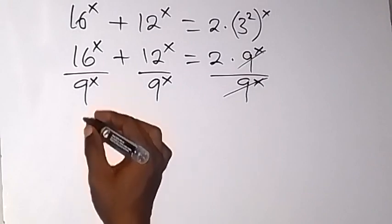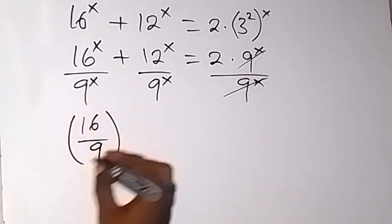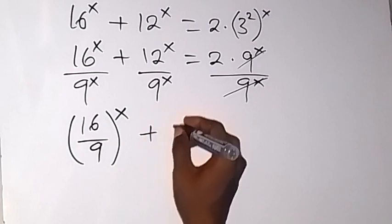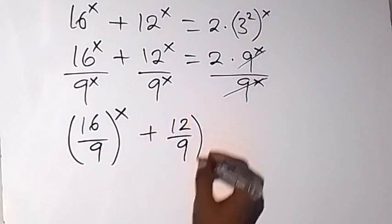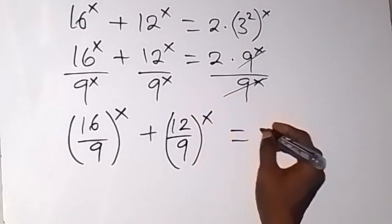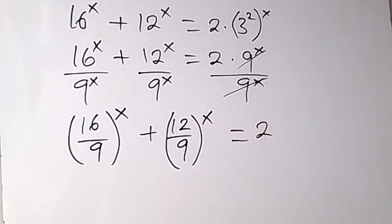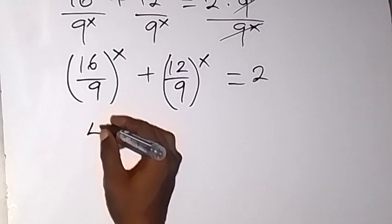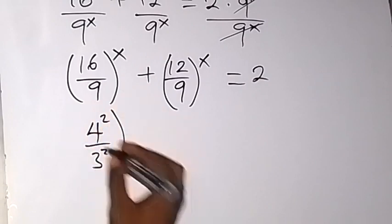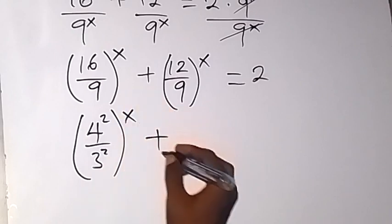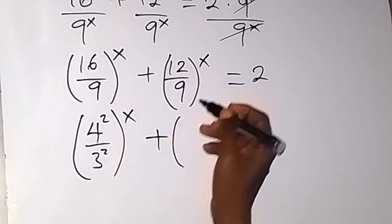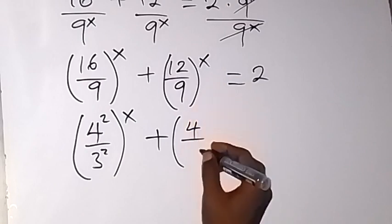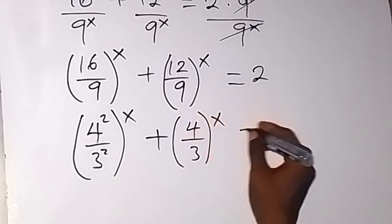We can write 16 over 9, bringing the power of x out — also from the law of indices. Similarly, we have plus 12 over 9, bringing the power of x out, which is equal to 2. Inside the bracket, 16 over 9 can be rewritten as 4 squared over 3 squared, raised to power x. For the other bracket, 3 divides both numbers: 3 into 12 is 4, and 3 into 9 is 3, giving 4 over 3 raised to power x, equal to 2.